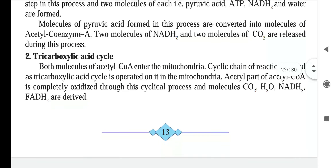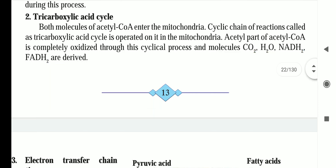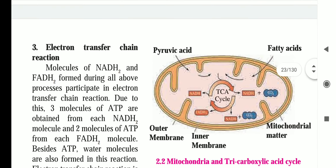Another process is the tricarboxylic acid cycle. Both molecules of acetyl coenzyme A enter the mitochondria, where a cyclic chain of reactions called the tricarboxylic acid cycle is operated. The acetyl part of acetyl coenzyme A is completely oxidized through this process, and molecules of carbon dioxide, water, NADH2, and FADH2 are derived.